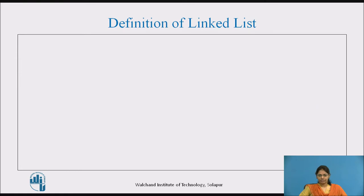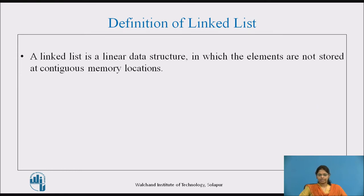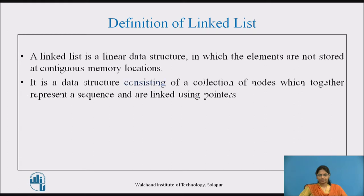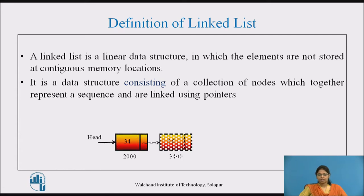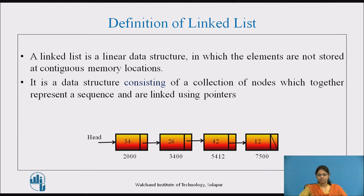Let's see the definition of a linked list. A linked list is a linear data structure in which the elements are not stored at contiguous memory locations. It is a data structure consisting of a collection of nodes which together represent a sequence and are linked using pointers. The first node is pointed by the pointer head and the last node is terminated by a null.